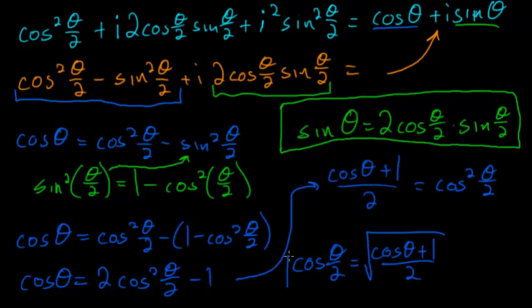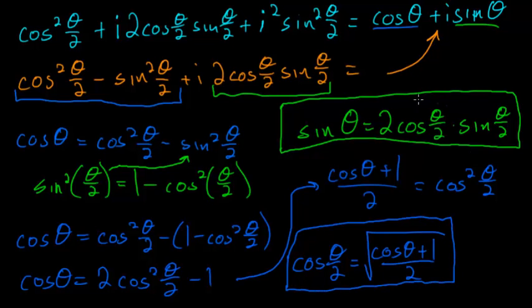The cosine of theta over 2 is equal to the square root of the cosine of theta plus 1 divided by 2. This is the second identity that we were looking for. In the next video, I will use these identities to derive Viète's formula.